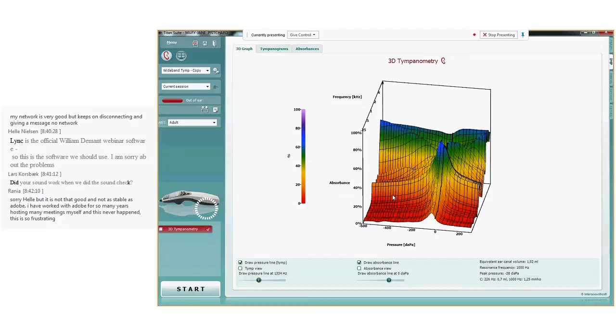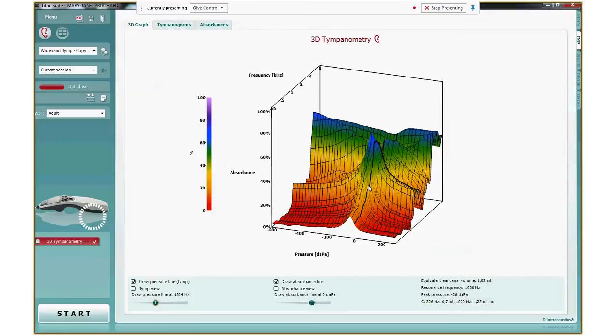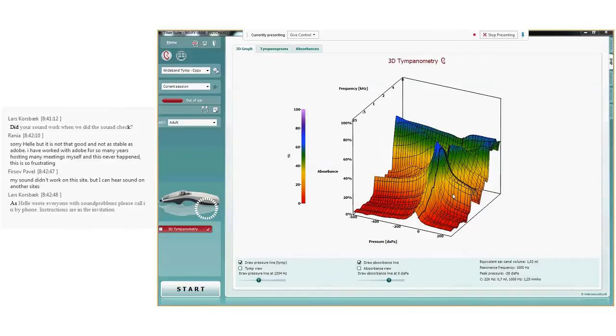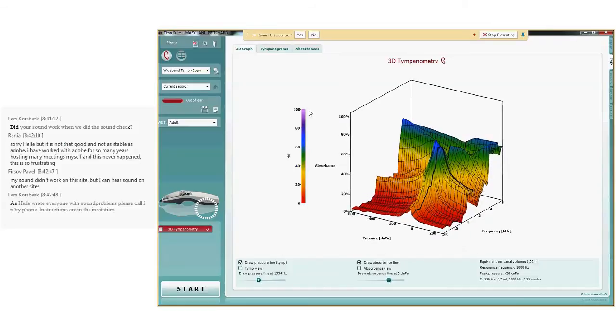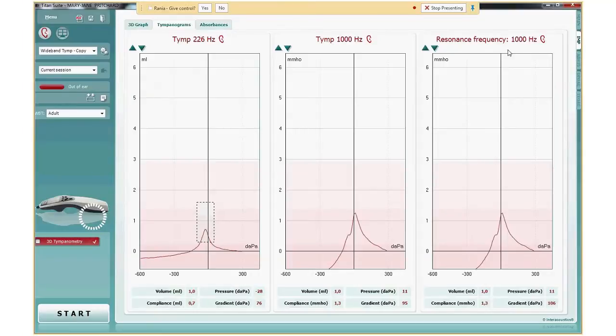Some people wonder if they have to understand these type of 3D graphs. The answer is no. It is really meant to be pretty. It is meant to impress people. And it is meant as a tool to explain to new users how wideband tympanometry is used. The useful information we present in an easier way, which is done with regards to tympanograms in the tympanograms tab. So what we see here is three tympanograms. I show the tympanogram at 226 hertz on the left. In the middle, I show the 1,000 hertz tympanogram. And on the right, I show resonance frequency tympanogram. That's a big coincidence that my resonance frequency is now measured at exactly 1,000 hertz as well.